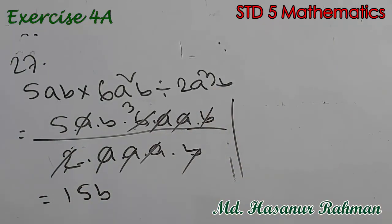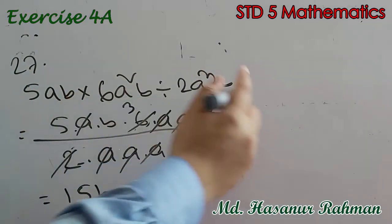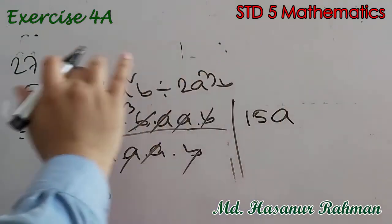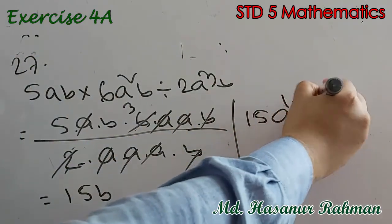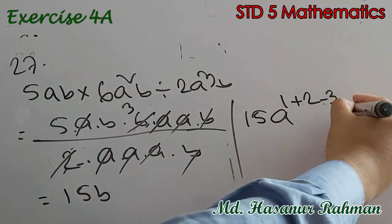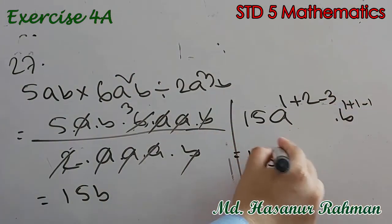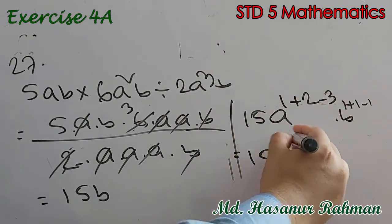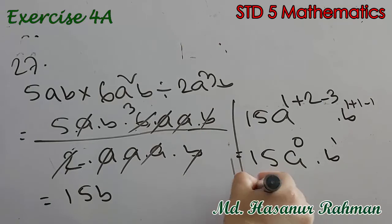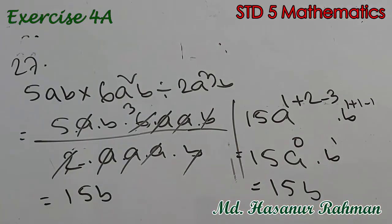Alternatively, 5 into 6 is 30, divided by 2 is 15. For the a terms: a to the power 1 plus 2 minus 3 is a to the power 0, which equals 1. For b: b to the power 1 plus 1 minus 1 is b to the power 1. So the answer is 15 into 1 into b, which is 15b, since a to the power 0 equals 1.